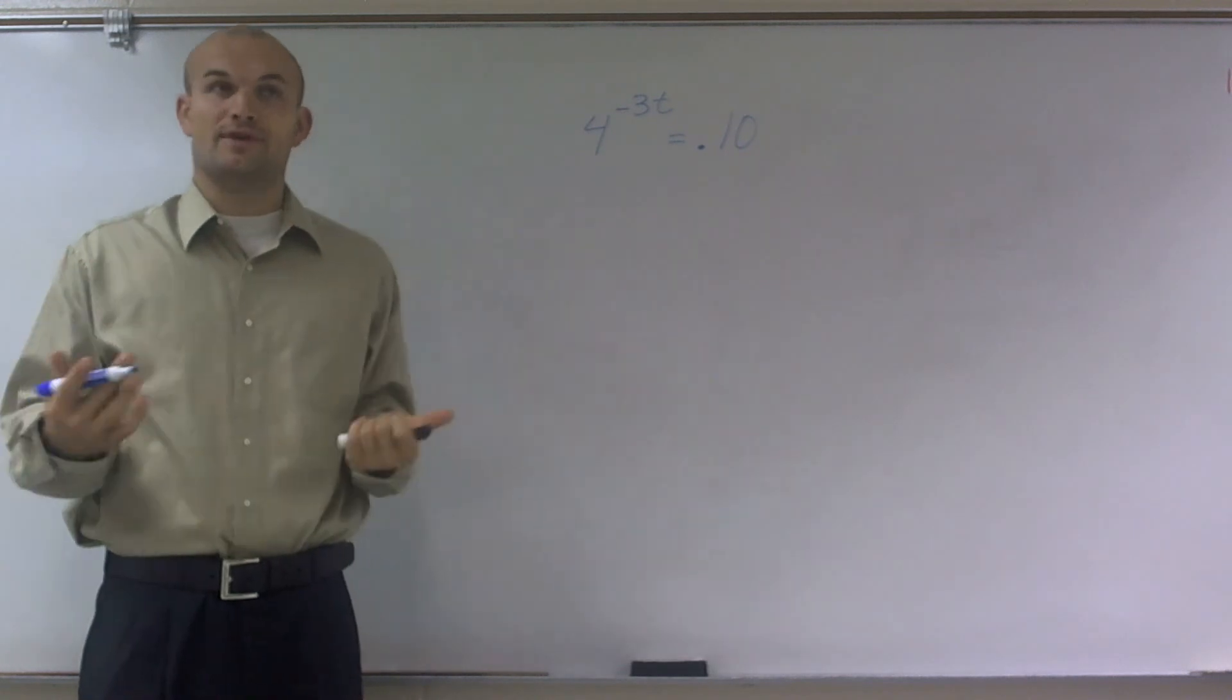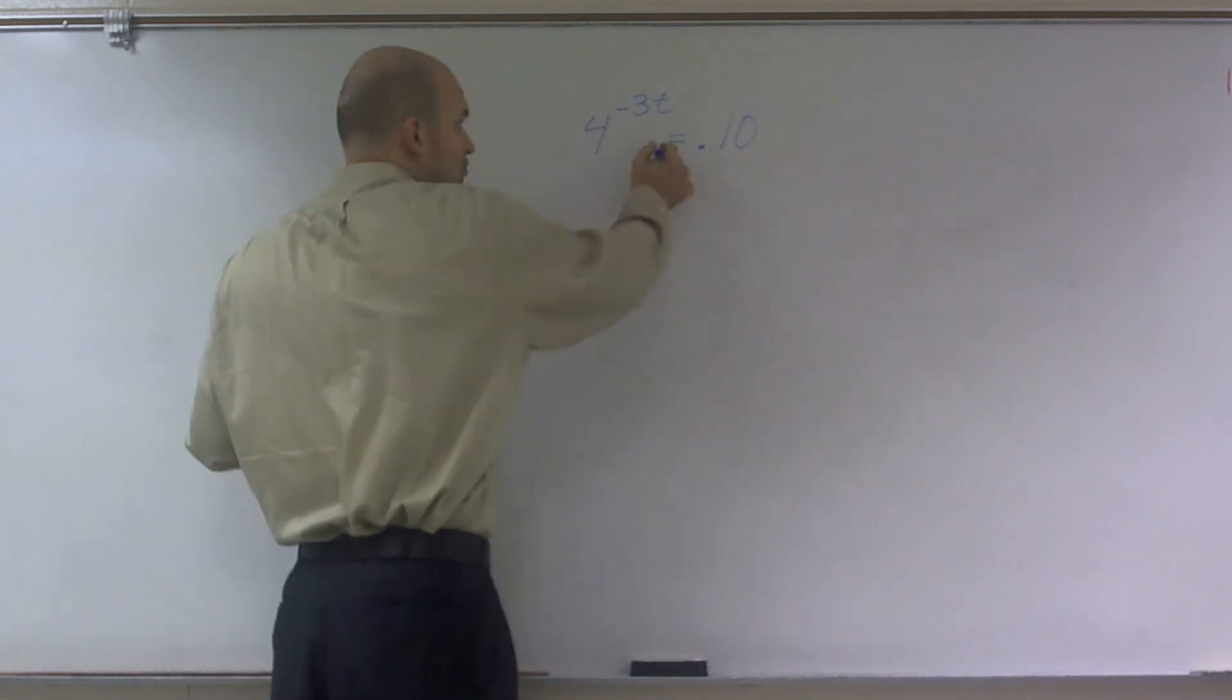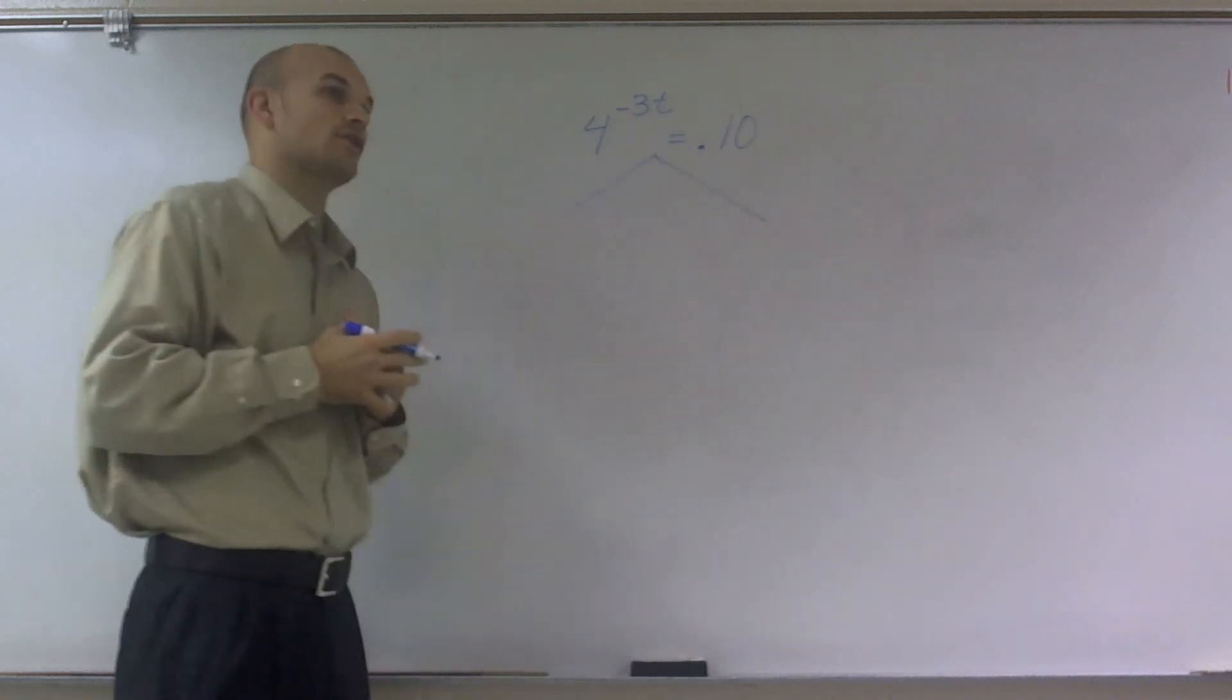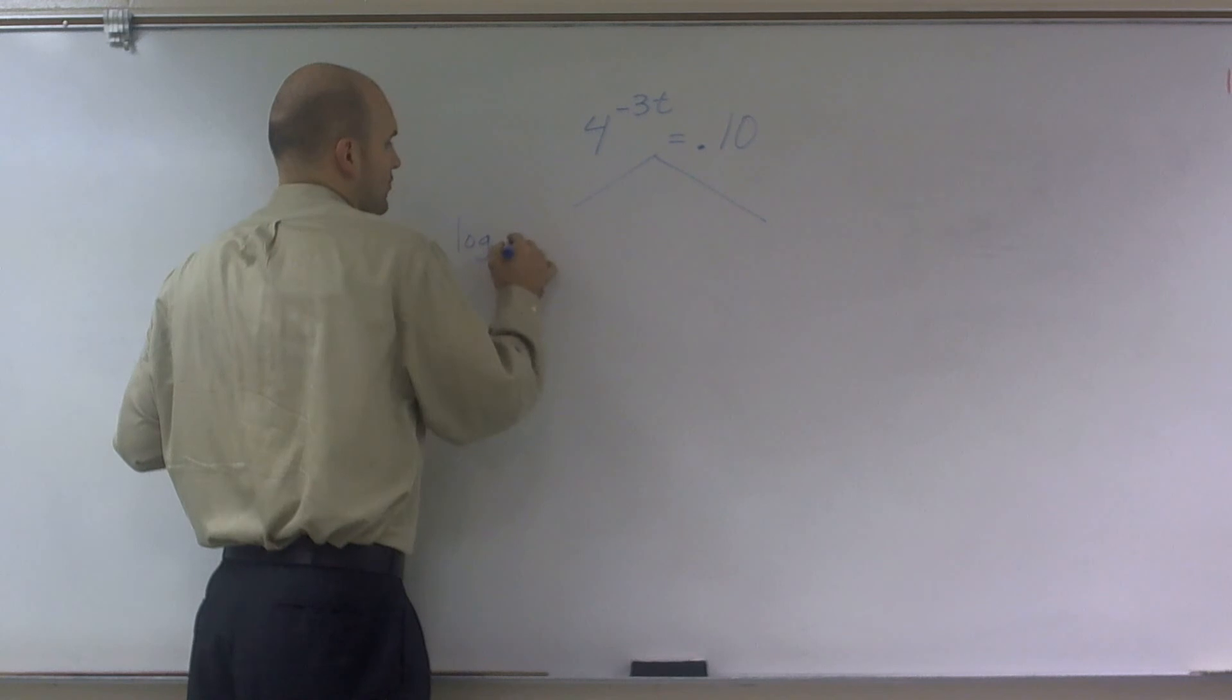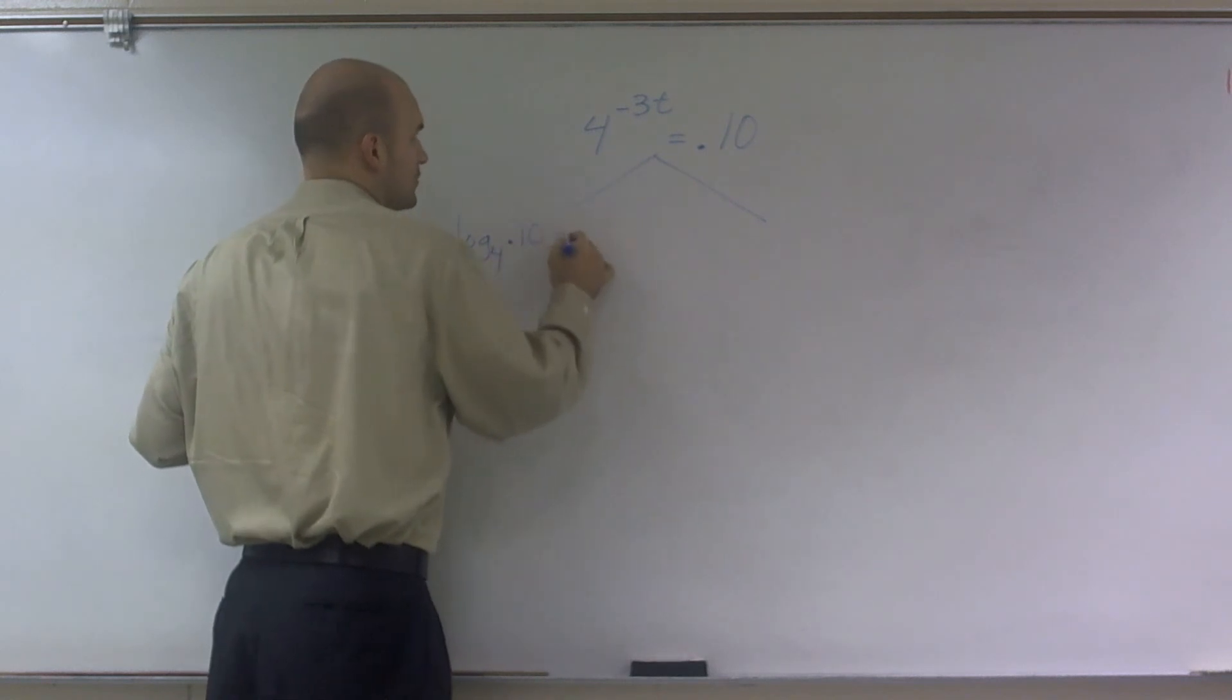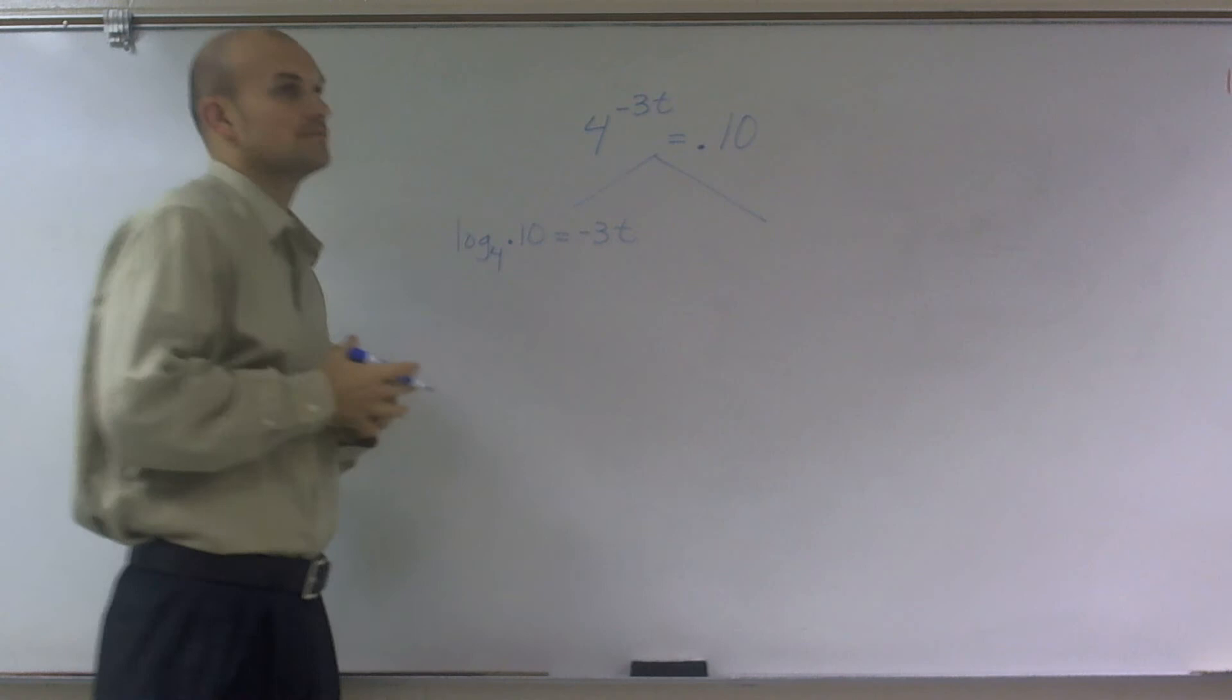There's two different ways we can get rid of it. The one way, which I told you you have to know how to do, is transfer this to logarithmic form. So you could say this is log base 4 of 0.10 equals negative 3t.